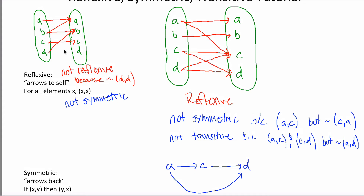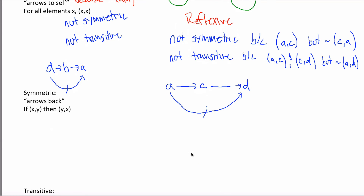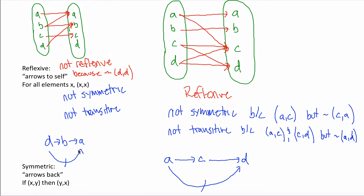Is the other relation transitive? It's not. Why? There's an arrow from D to B and an arrow from B to A, but there is not an arrow from D to A. So this relation is not transitive because there's an arrow from D to B and from B to A, but not from D to A.